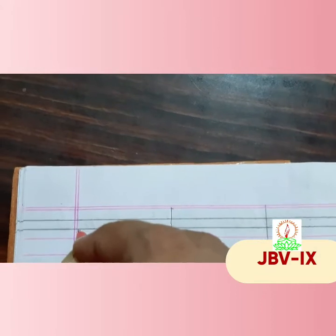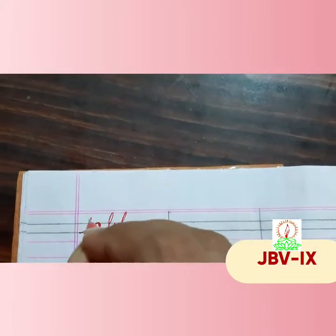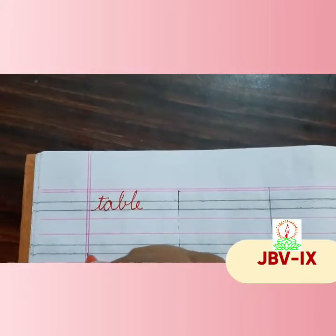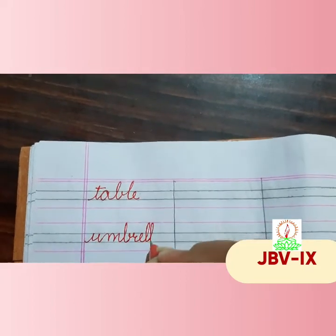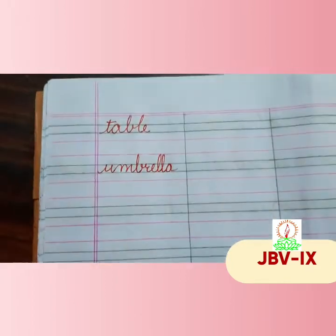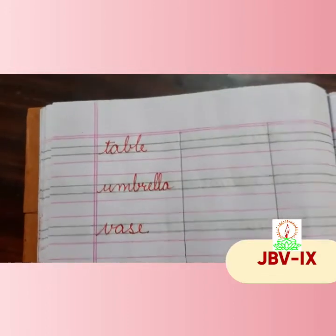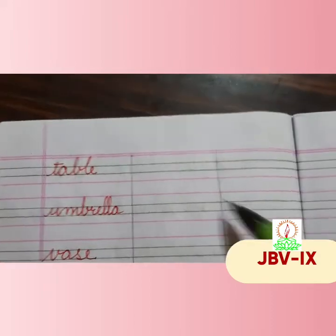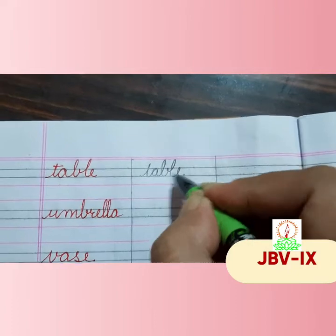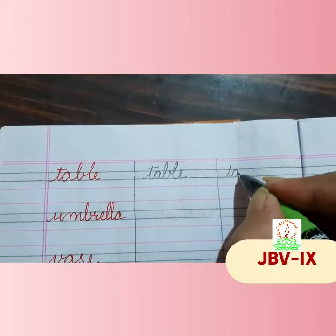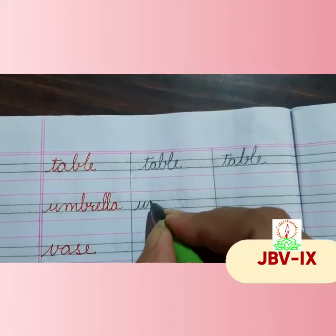T for table. What is the spelling of table? T-A-B-L-E. Table. Next is umbrella — U-M-B-R-E-L-L-A. Umbrella. Next is vase — V-A-S-E. Now children, you have to write T-A-B-L-E. Table. T-A-B-L-E. Table. Next is umbrella — U-M-B-R-E-L-L-A.